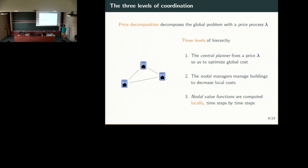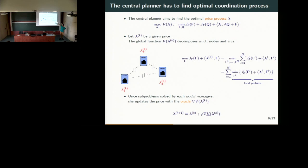As we consider multi-stage stochastic optimization problems in each building, we will solve each problem in each building by using dynamic programming techniques — that is, we will compute value functions time step by step in the backward way. The central planner wants to find the saddle point of this problem. We will iterate using, for instance, a subgradient algorithm until it finds the optimal prices. Once you fix the price, you are able to decompose the problem node by node, or building by building.